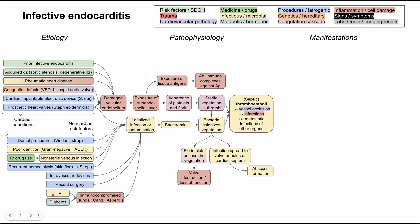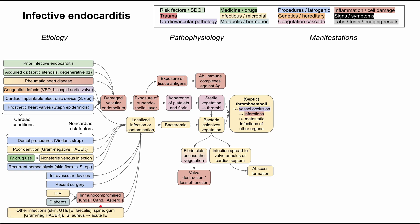Conditions predisposing to immunocompromise include HIV and uncontrolled diabetes. Generally, any infection — skin infections, UTIs, spine infections, or gum infections — can cause contamination leading to infective endocarditis. Enterococcus faecalis is the most common organism from UTIs, while gum infections predispose to the gram-negative HACEK organisms. All of these can lead to contamination and infective endocarditis.